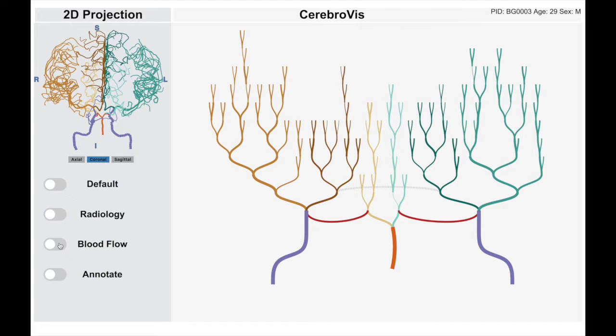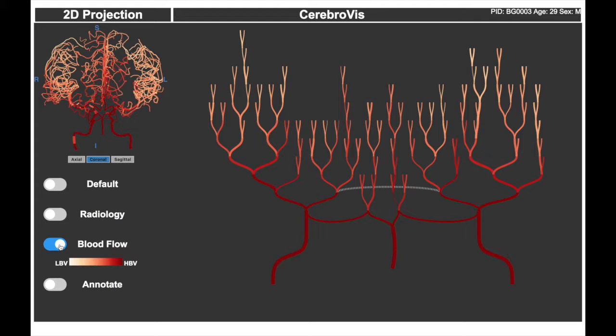Additionally, the edges in the cerebral network can encode blood flow. Since we do not have blood flow data, we demonstrate the feature with a simulated blood flow model.